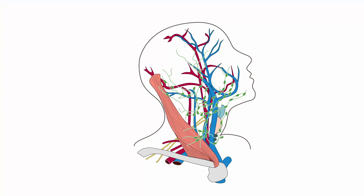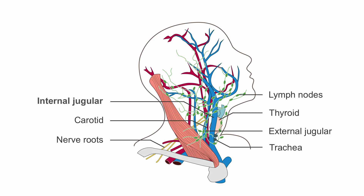Let's take a look at the vessels of the neck. In this anatomical cartoon, you can see the structures of the lateral neck with internal jugular, carotid, nerve roots, lymph nodes, thyroid, external jugular, and trachea in view.